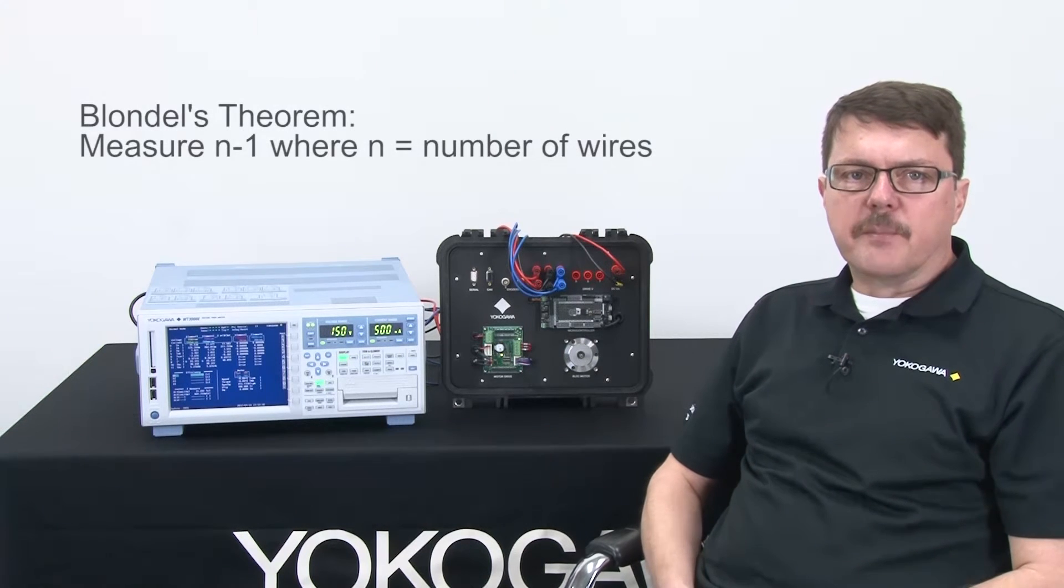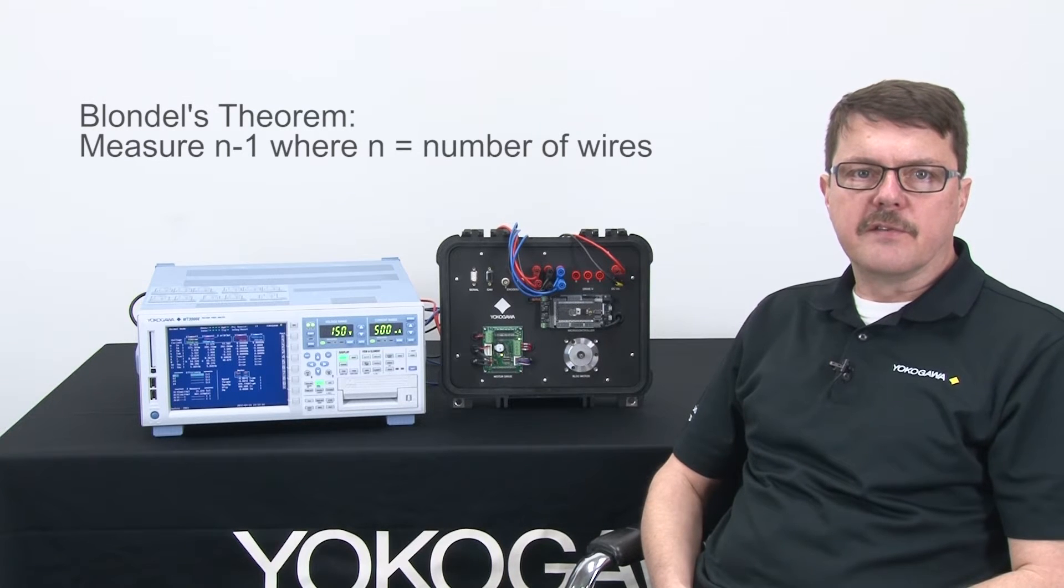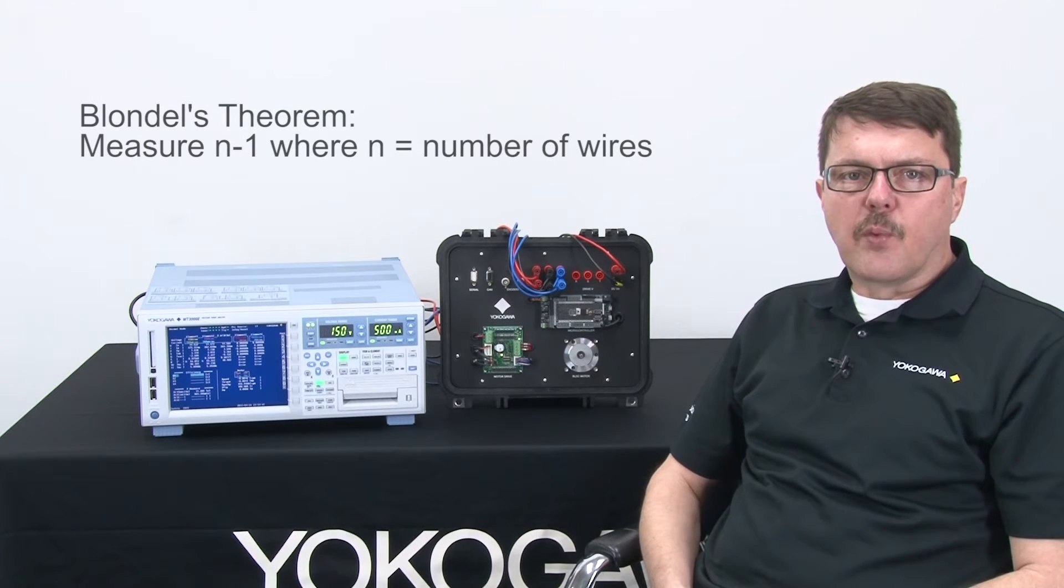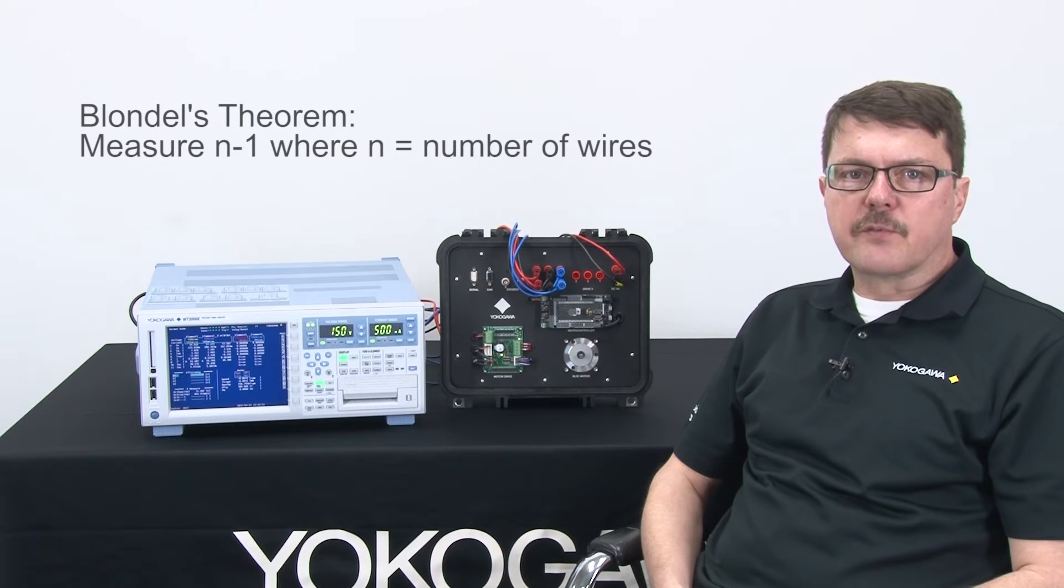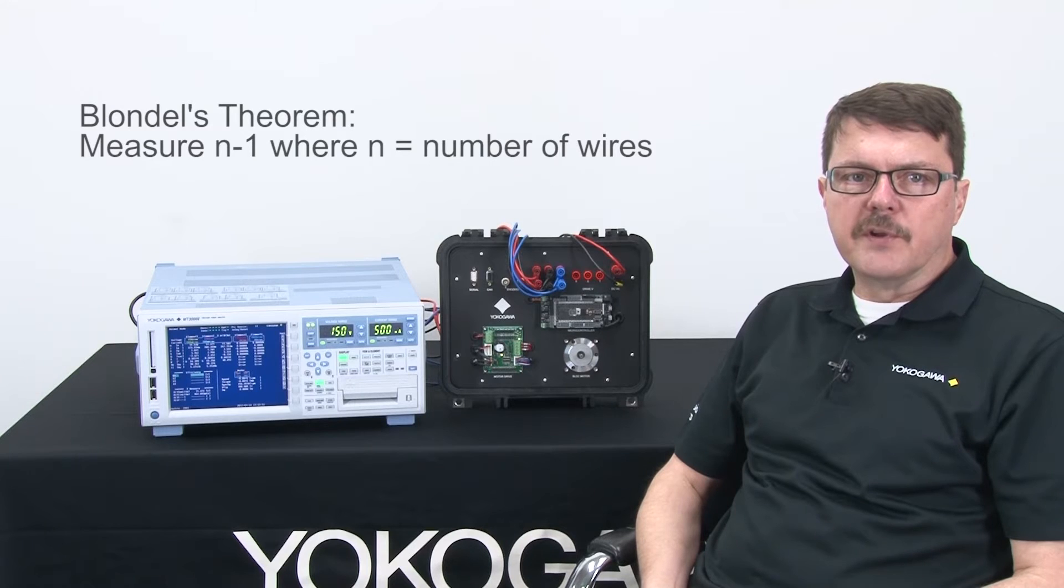However, Blondell's theorem states that we can measure power using n minus one meters, where n is the number of wires. For a three-wire system, n minus one is three minus one equals two, and that means two wattmeters.